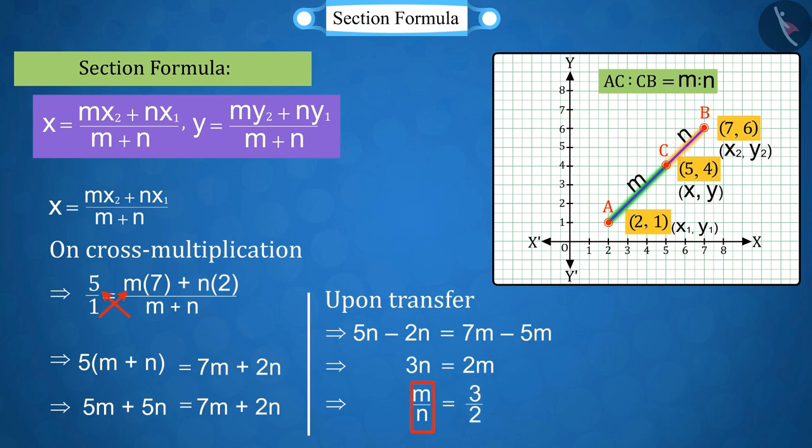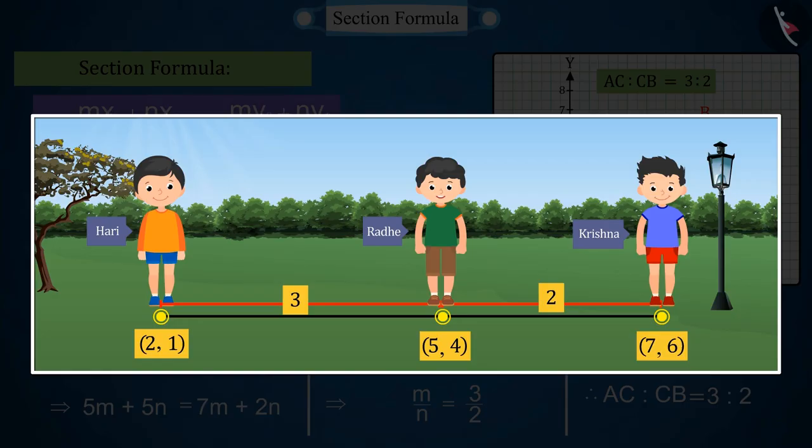On solving, we get m/n = 3/2, that is m:n = 3:2. So we can say that Radhe is standing at a distance in 3:2 ratio from both friends.